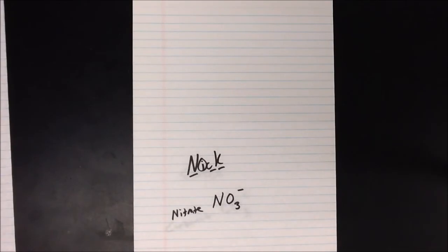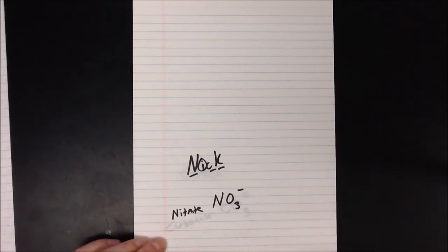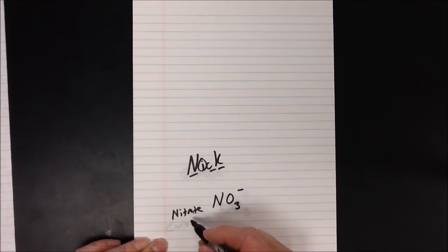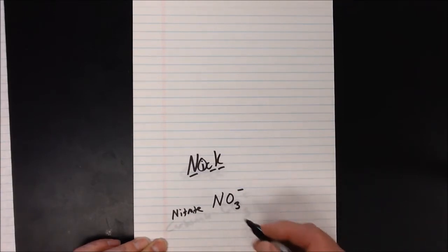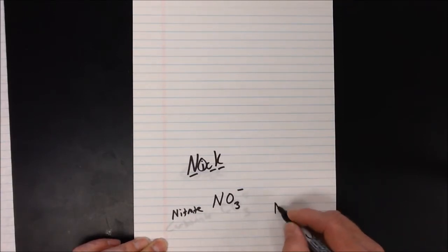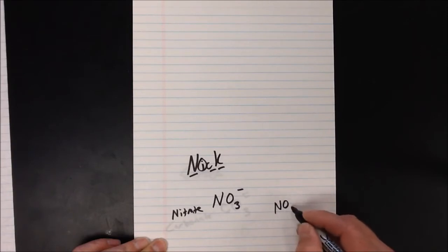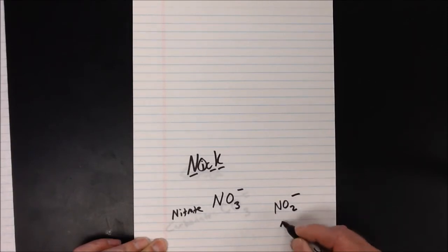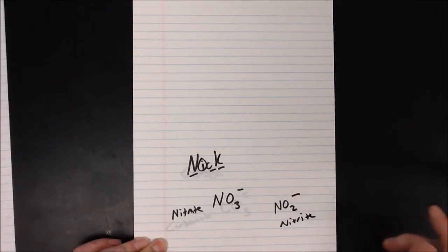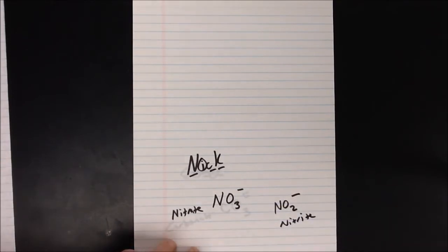From those five polyatomic ions, we can derive more using basic rules about how charges can vary on the less electronegative element. If we know nitrate, we also have nitrite. Nitrite is one less oxygen with the same charge, so if you know nitrate, you should also know nitrite.